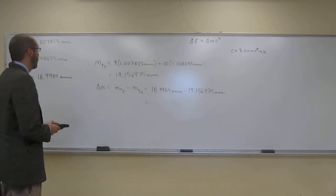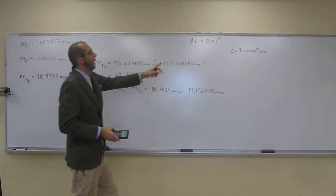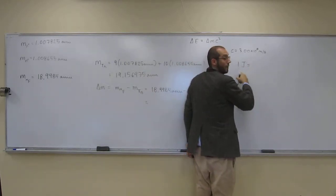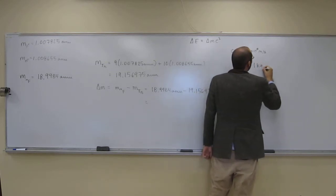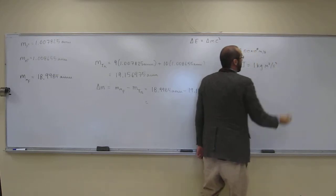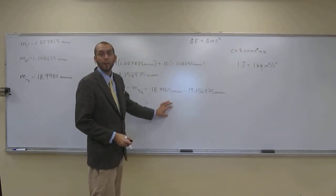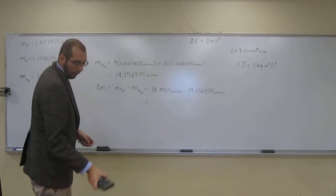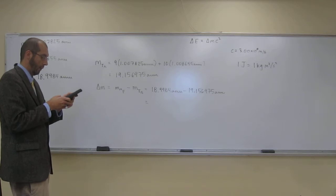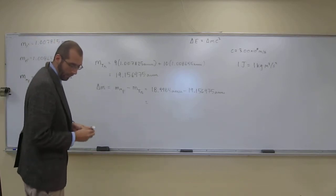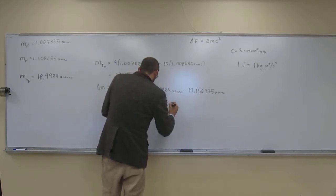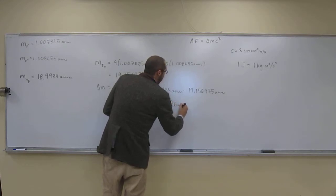Is everybody following me here? So we're going to plug in: 18.9984 AMU minus 19.156975 AMU. Remember, energy has to be in joules — one joule equals one kilogram meter squared per second squared — so we'll get a mass in AMU but we'll need to convert that to kilograms. The result after the decimal is negative 0.1586 AMU.